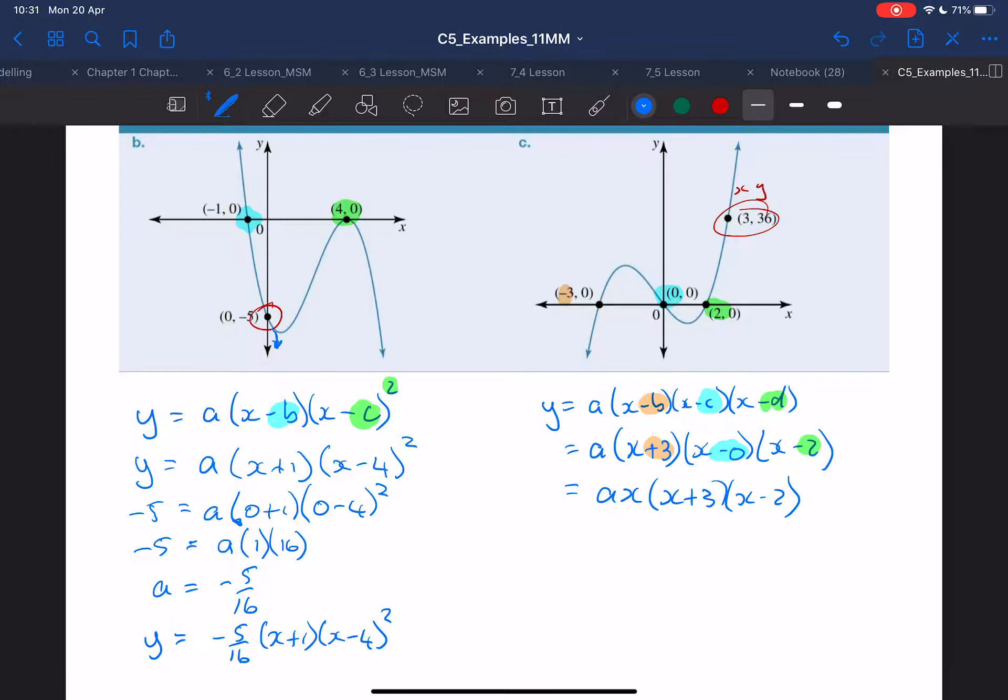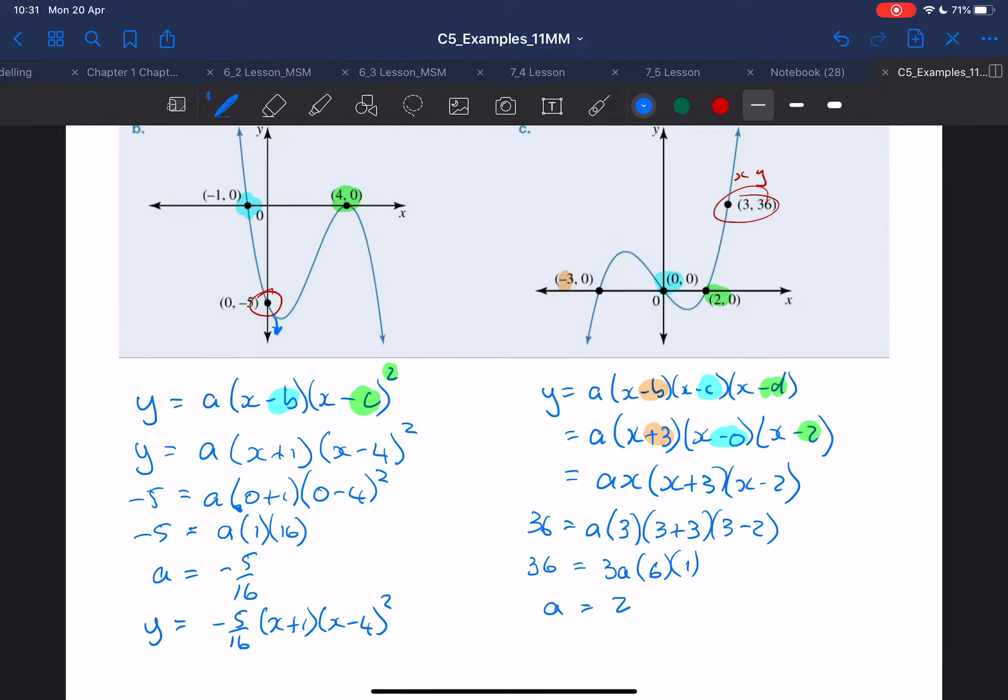Then, I'm going to say when y equals 36, a will equal 3, 3 plus 3, times 3, minus 2. So that will give us 36 equals 3a times 6 times 1. That is 18, so divide by 18, a equals 36 divided by 18 is 2. So my equation will be y equals 2x, x plus 3, x minus 2.